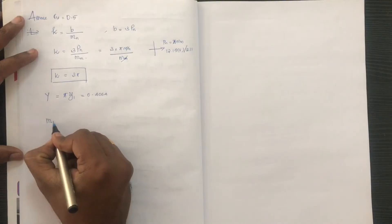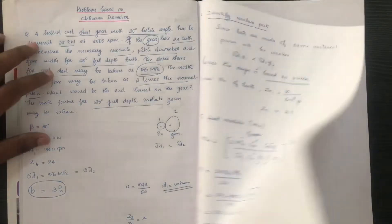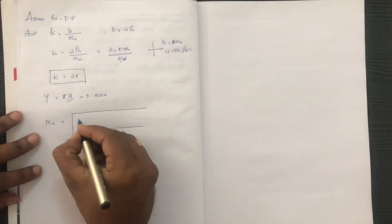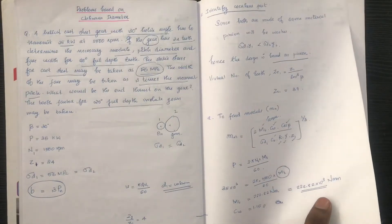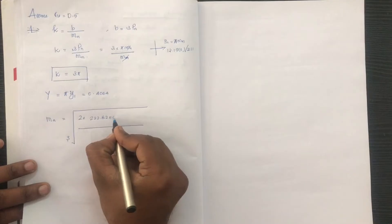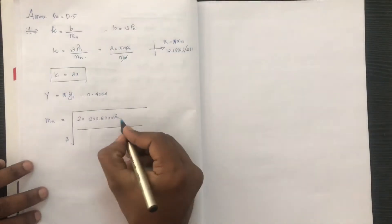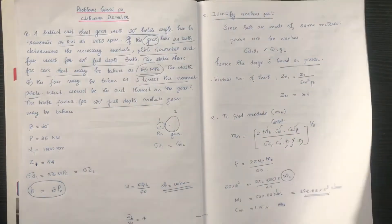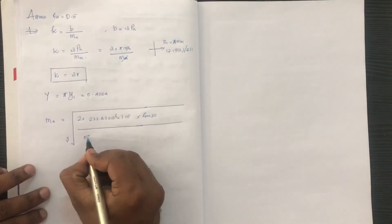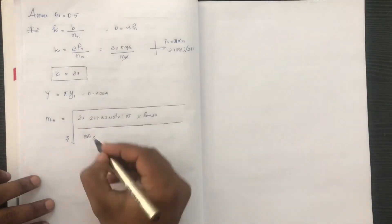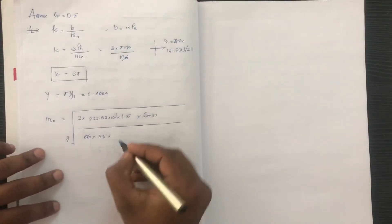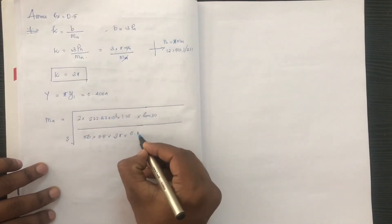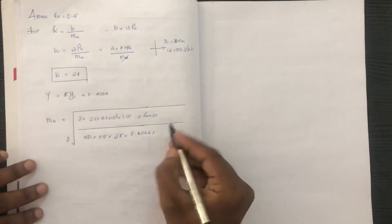Now substituting all values into the cube root equation: numerator is 2 into Mt = 222.82 into 10 raised to 3. For Cw we use 1.15 from the data book. Cos beta, denominator sigma D1 = 56 MPa, and cv is assumed as 0.5.